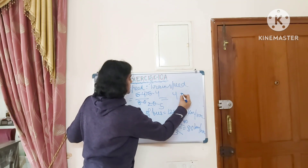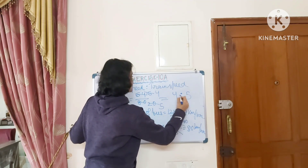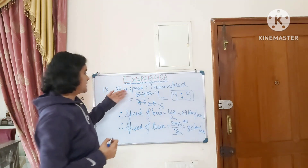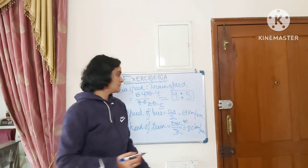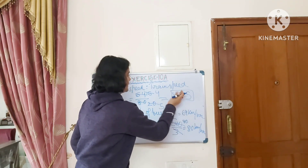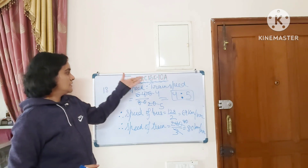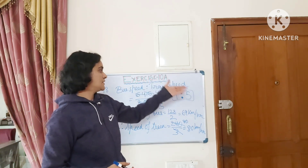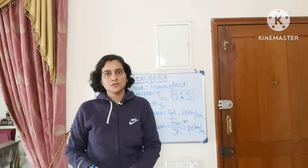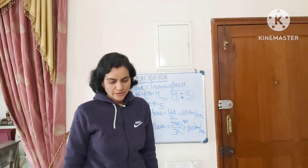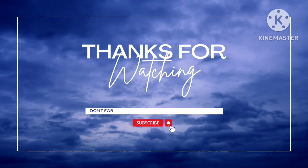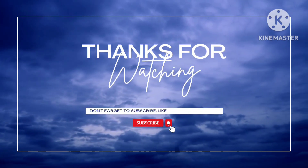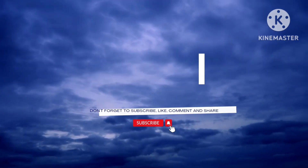Simplifying 64 by 80: the common factor is 16, giving us 4 is to 5. So the ratio of bus speed to train speed is 4 is to 5. If reversed, train speed to bus speed would be 5 is to 4. This is the answer for question number 18.